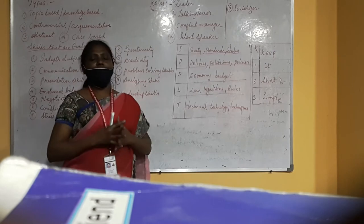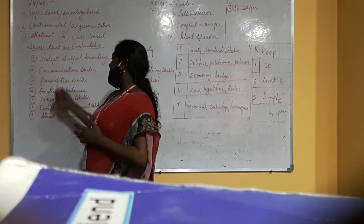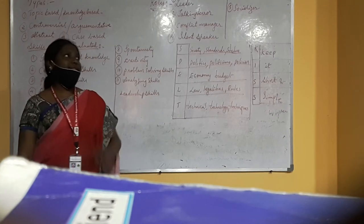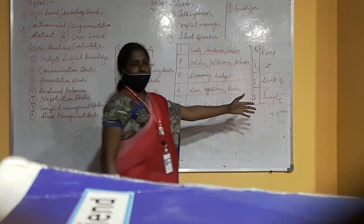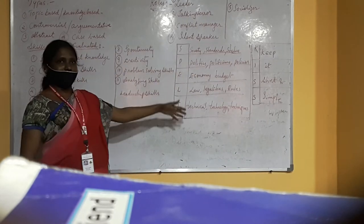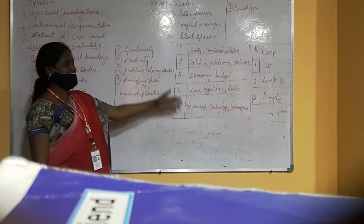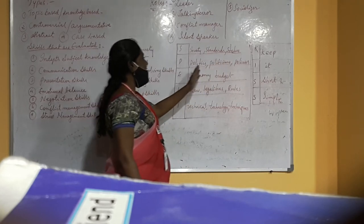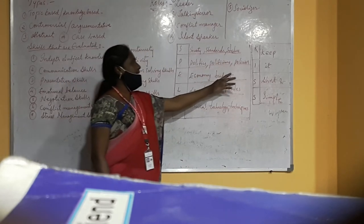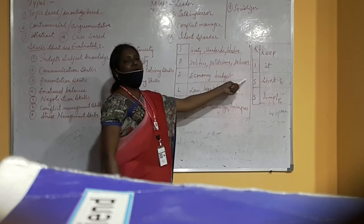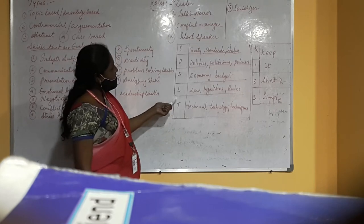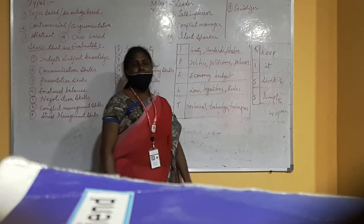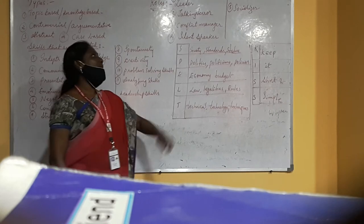Let me introduce the SPELT technique. S stands for Society, standards, status. P stands for Politics, politicians, policies. E stands for Economy, budget, economical aspects. L stands for Law, legalities, rules. T stands for Technical, technology, and techniques. How do we apply the SPELT technique in a group discussion? After giving the introduction and the proverb about Swachh Bharat — 'Cleanliness is next to godliness' — and the definition and history, we proceed through each SPELT dimension.